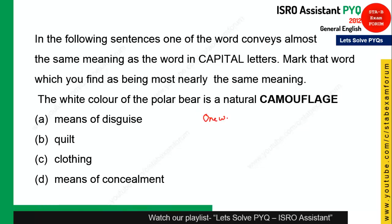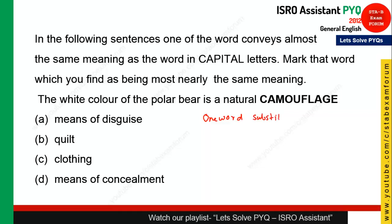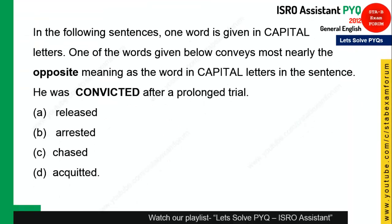This question is from one-word substitution. The statement says: 'The white color of the polar bear is a natural ___.' The word is 'camouflage'. Camouflage means a means of disguise — the other person or animal is not able to identify you in the natural environment. 'Means of disguise' is the most appropriate answer. Option A is the right answer.